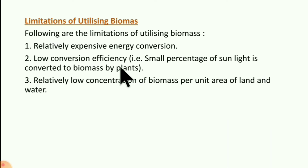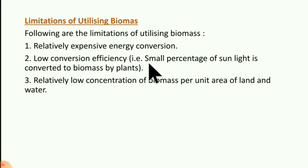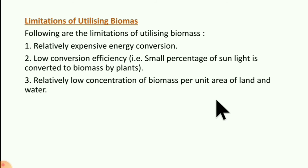So now we will know what are the limitations of utilizing biomass. Following are the limitations of utilizing biomass: 1. Relatively expensive energy conversion. 2. Low conversion efficiency — for example, only a small percentage of sunlight is converted to biomass by plants. 3. Relatively low concentration of biomass per unit area of land and water.